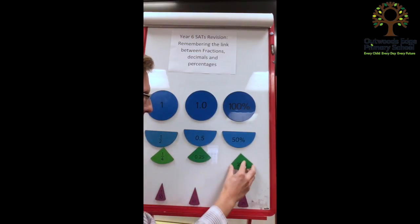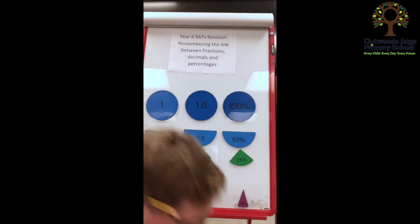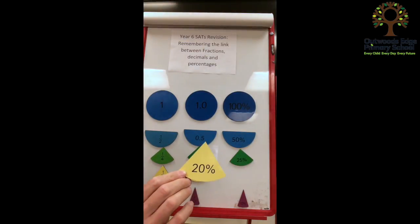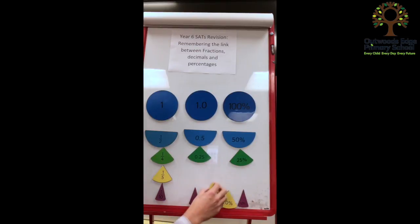The extra one that I've got here to show you, which if they can memorise it is helpful, if not it doesn't matter, is 1 fifth. Now 1 fifth is 2 tenths, which is the same as 0.2, which is equivalent to 20%. So we're going to have a go at using that information to help us solve the problem.